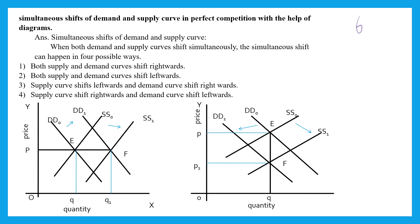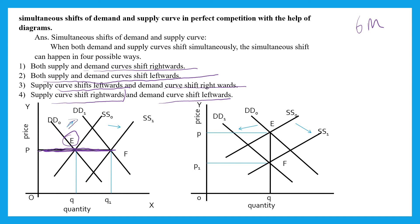Dear students, this is important for 6 marks. Easily you can get 6 on 6. The simultaneous shift in demand and supply curve takes place in 4 possibilities: both supply and demand curve shift rightward; both supply and demand curve shift leftward; supply curve shifts leftward and demand curve shifts rightward; supply curve shifts rightward and demand curve shifts leftward. When both demand and supply shift rightward, keeping price constant, quantity will increase.